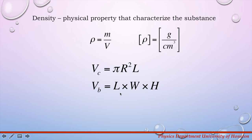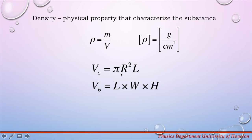First we will calculate the volumes by measuring the dimensions of the cylinder and block. Once you have the dimensions, you can calculate the volume of the block by multiplying length, width, and height or thickness of the block. To calculate the volume of the cylinder, we use the equation: volume equals pi times r squared times l, where r is the radius and l is the length of the cylinder.